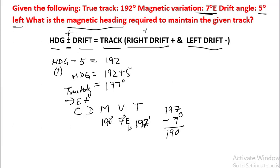Like I said, if variation, all the east figures going from left to right, we add in CDMVT. So we will get 190, which is our answer.